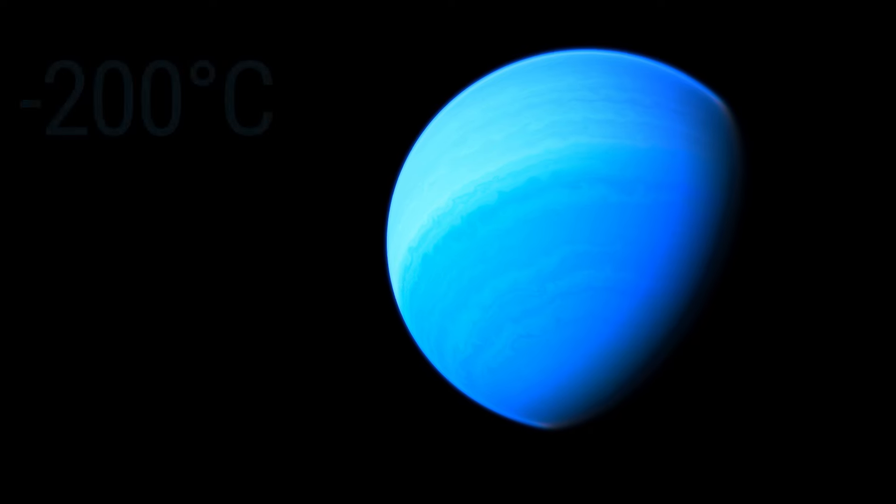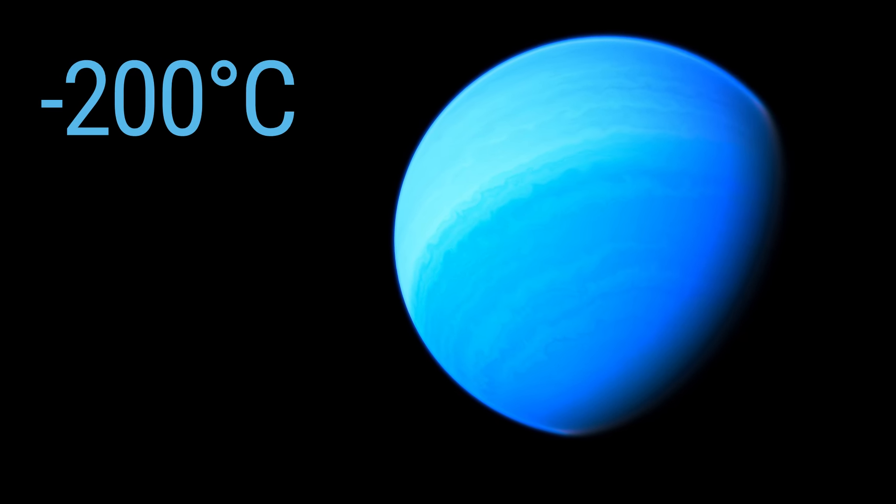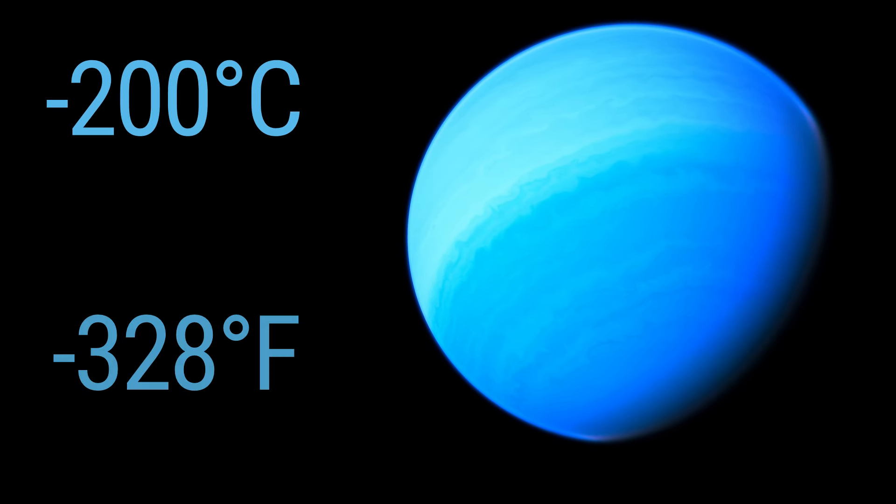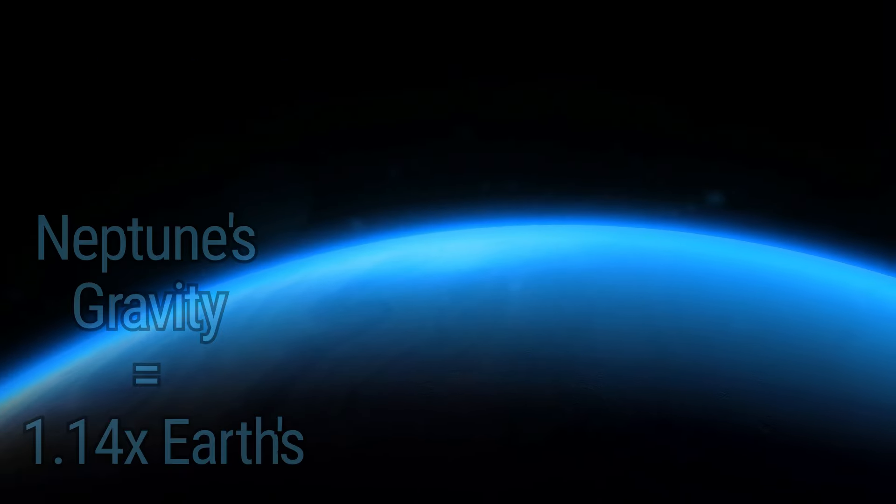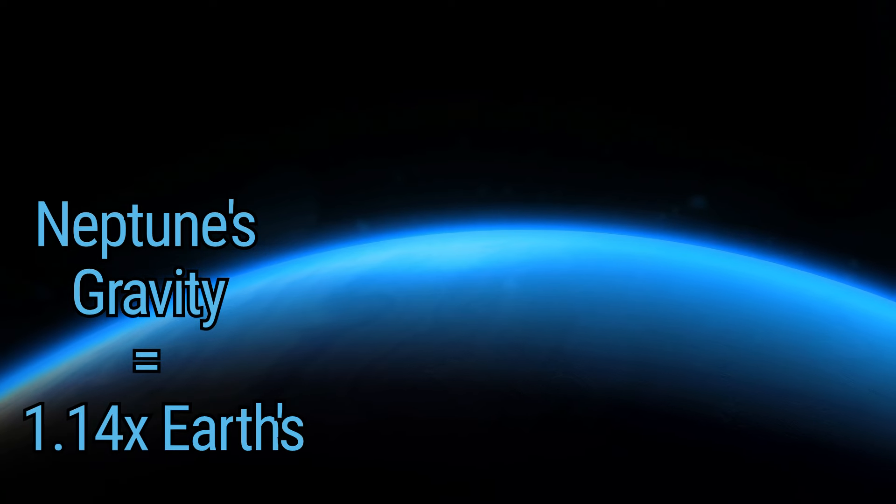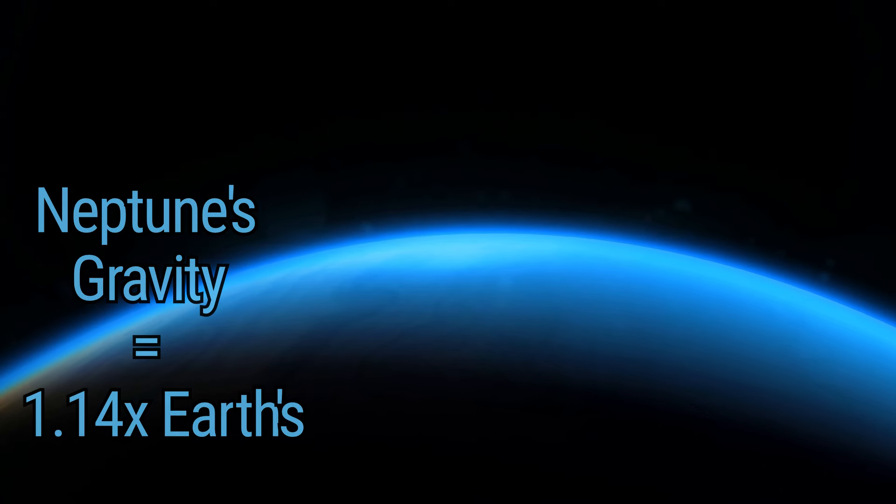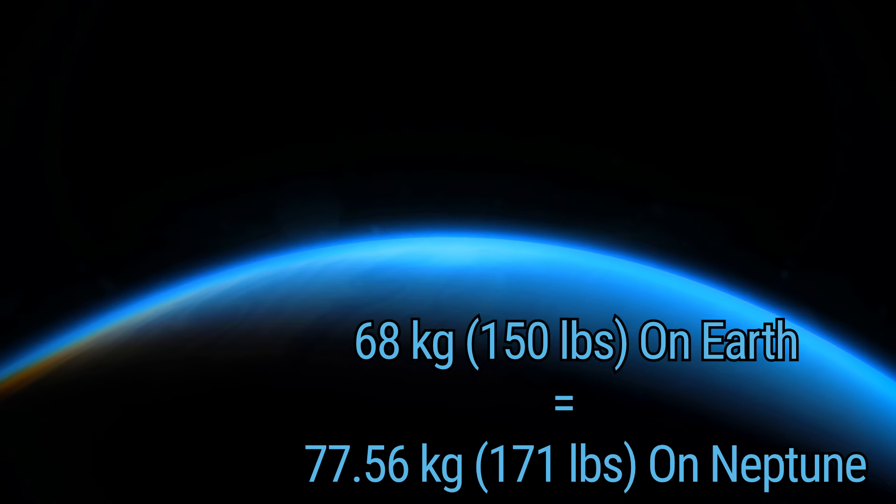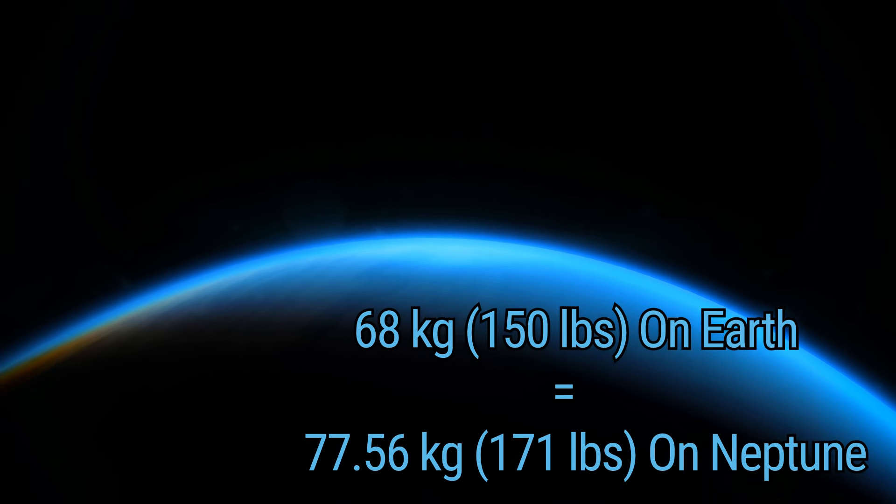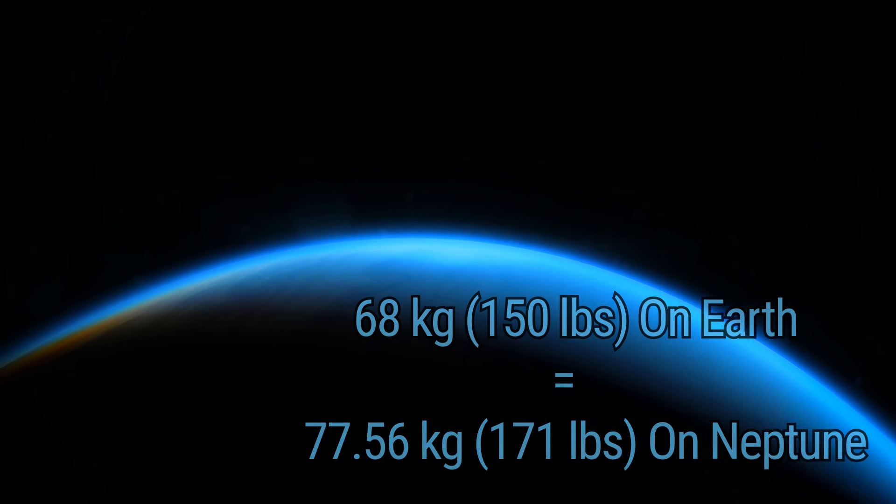Neptune's average temperature is around minus 200 degrees Celsius, or minus 328 degrees Fahrenheit. Gravity on Neptune is 1.14 times that of Earth's, and our 68-kilogram, or 150-pound traveler would weigh 77.56 kilograms, or 171 pounds, on this windy world.